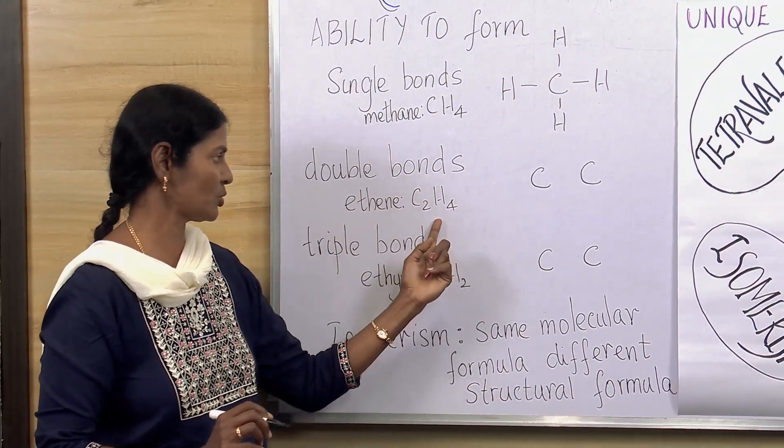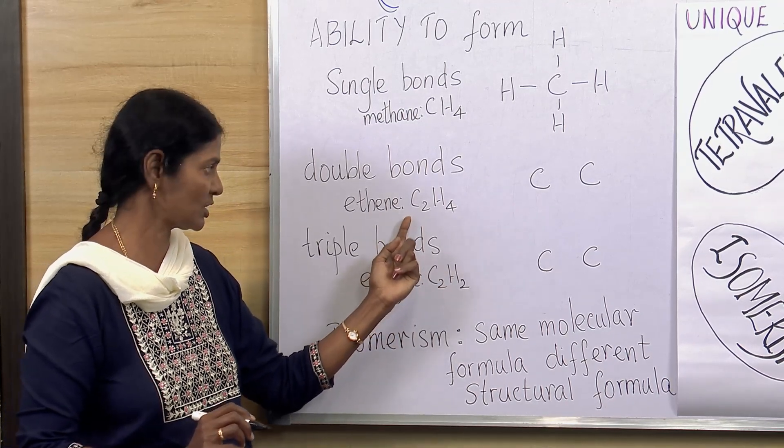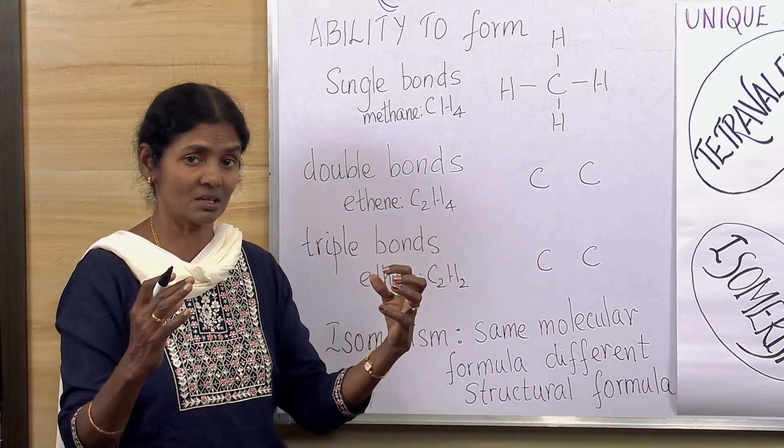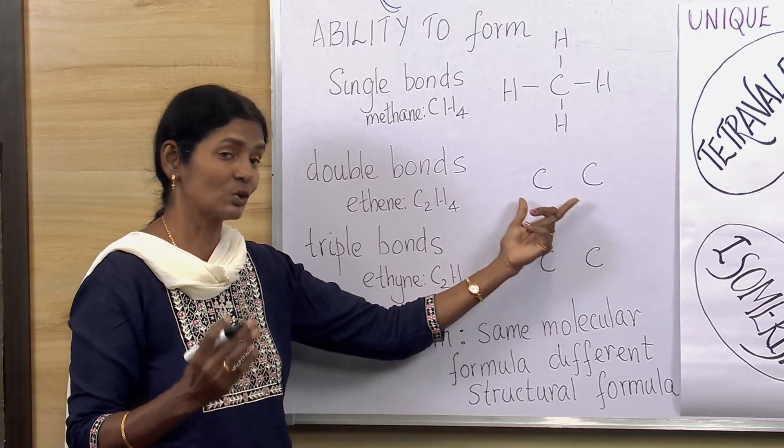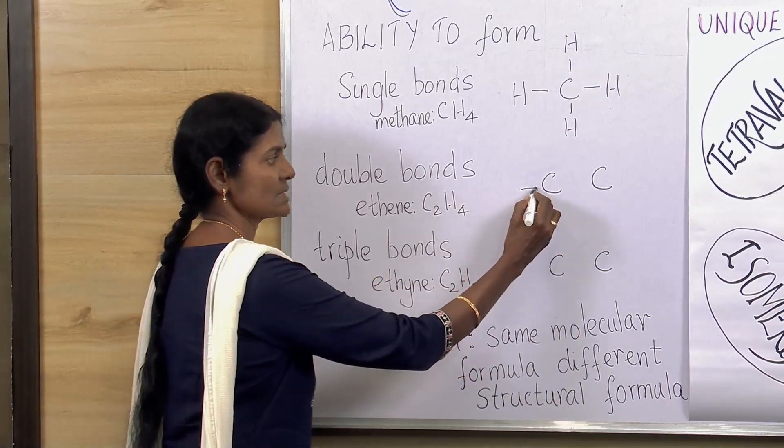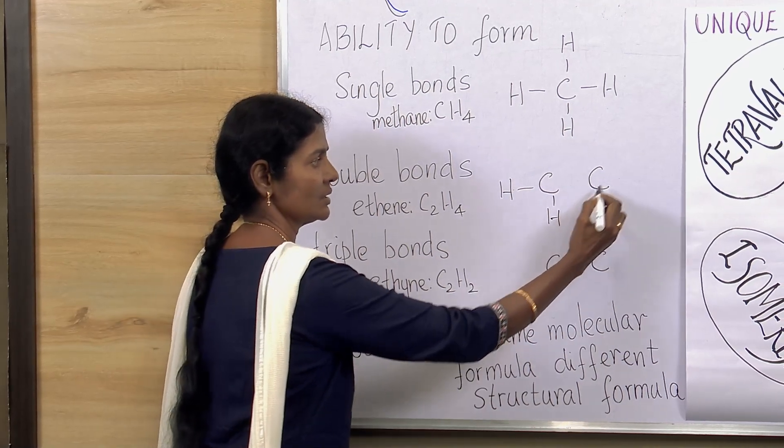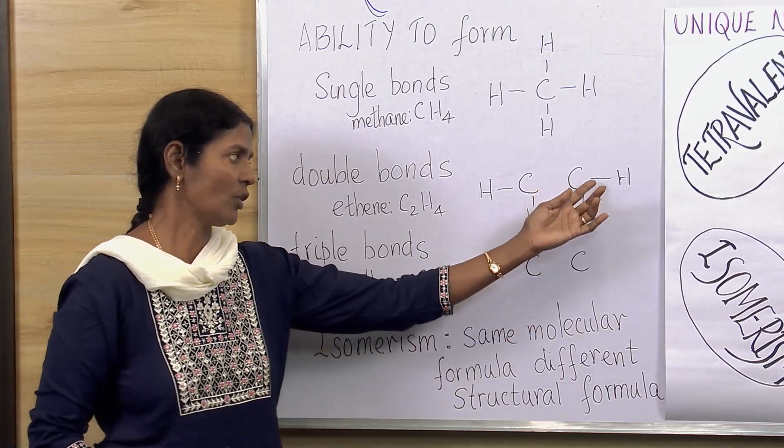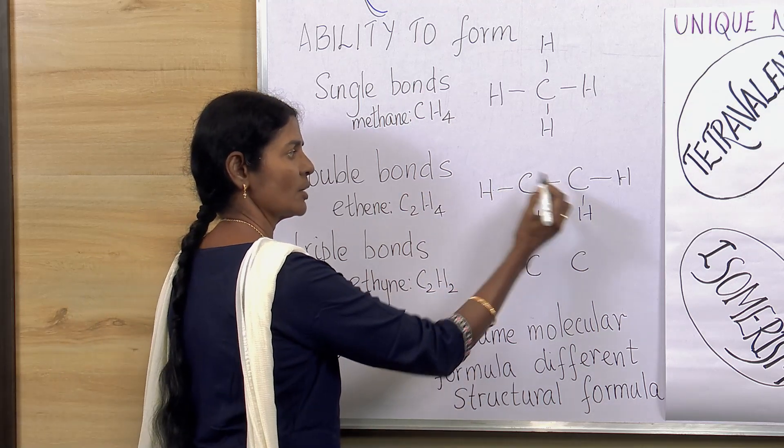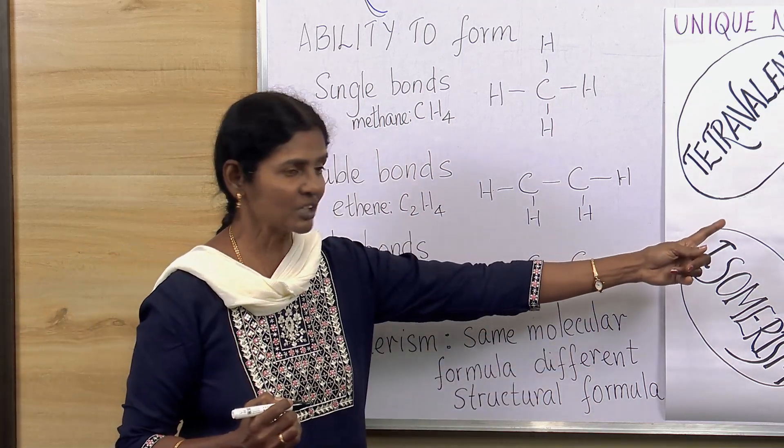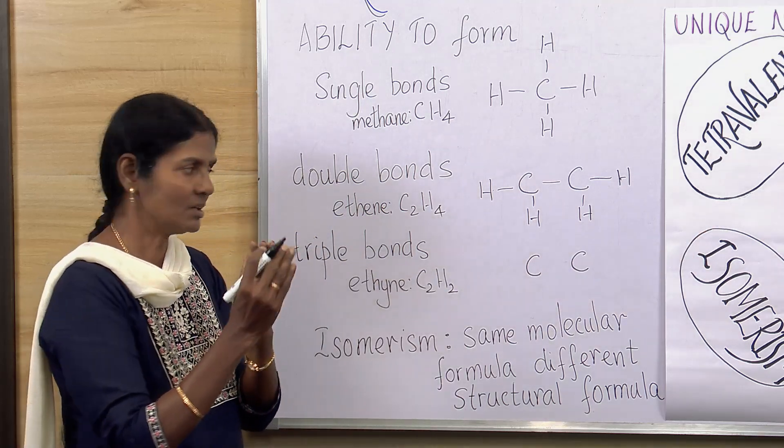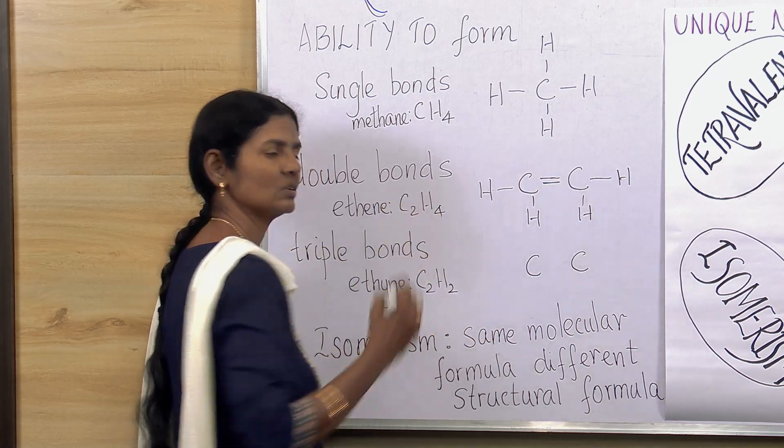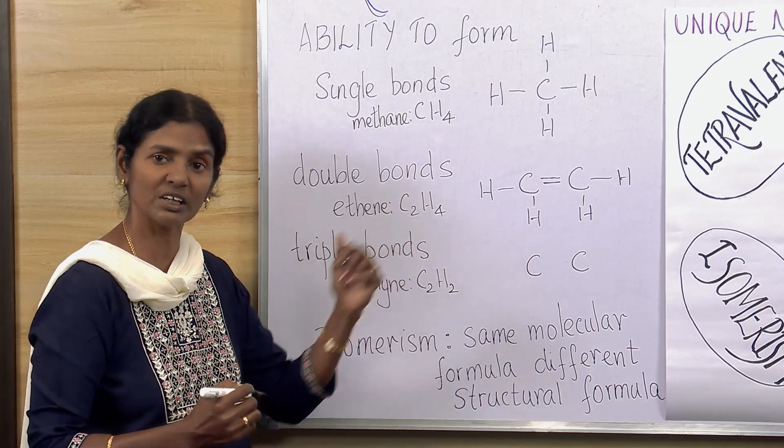Supposing we come to this compound called ethene, which has a formula C2H4, which means each carbon atom is taking equal share. Two carbon atoms, two hydrogen atoms each. One hydrogen atom here and another one here. For this carbon atom also, like this. Now, one and two, two bonds are over and one more bond is over. But a carbon atom needs four bonds. So, temporarily, it combines and forms a double bond here. That is the ability to form a double bond.